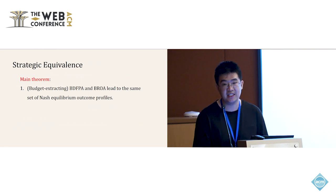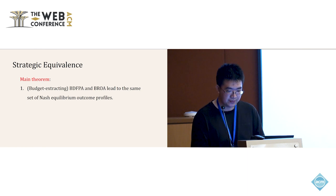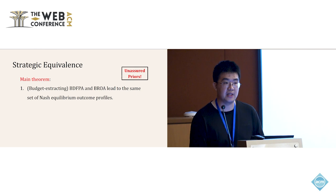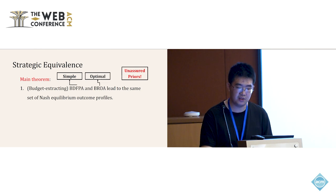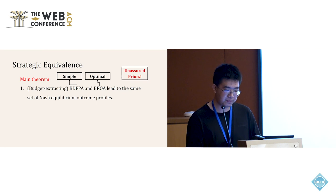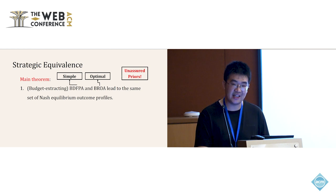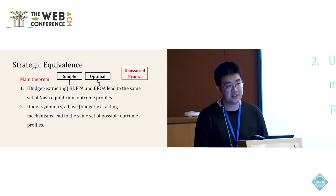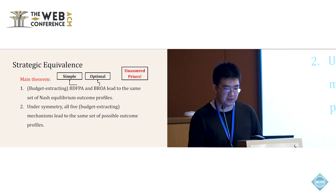Our main result shows that under budget extracting, BDFPA and the optimal auction lead to the same set of Nash equilibrium outcomes, in the prior information structure game as described. BDFPA is a simple auction form — a variant of first price auction — while the optimal auction is optimal under the IC constraint but more complicated. This is a simple versus optimal result: in practice, when we do not know the value distributions of buyers, we can use first price auctions and they give the same output in equilibrium. A side result is that in the symmetric case, all five budget extracting mechanisms lead to the same set of possible outcome profiles.